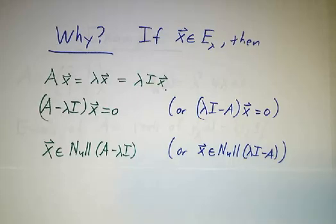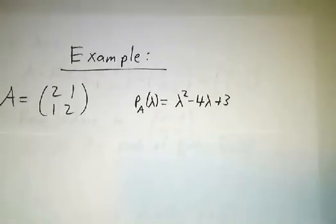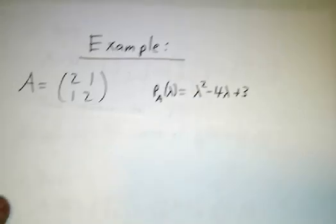And by definition, that means that x is in the null space of A minus λ times the identity. Or its negative. Okay? So there you have it. Let's work an example. Work our favorite example, which is the matrix 2, 1, 1, 2.